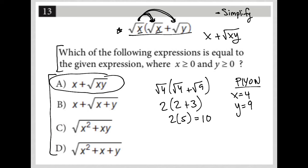And then I'd be looking at my answer choices to see which of these give me 10. So for choice A, x is 4 plus x times y. So x times y for us would be 36. The square root of 36 is 6. And 4 plus 6 does, in fact, equal 10. So that would be how we'd find choice A using the plug-in your own number method.